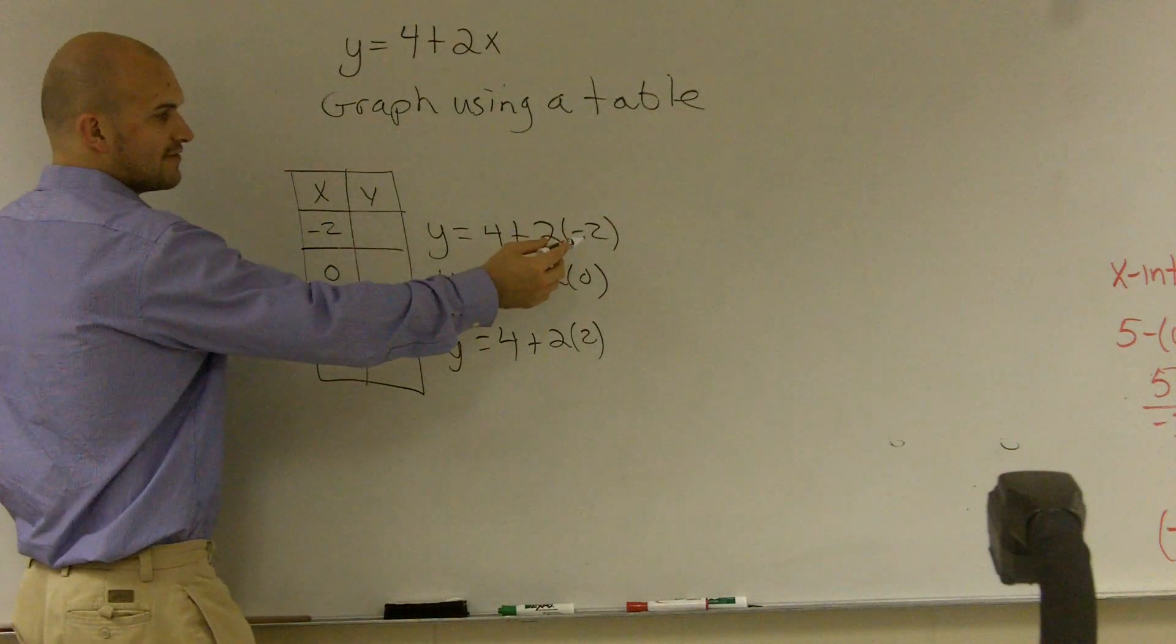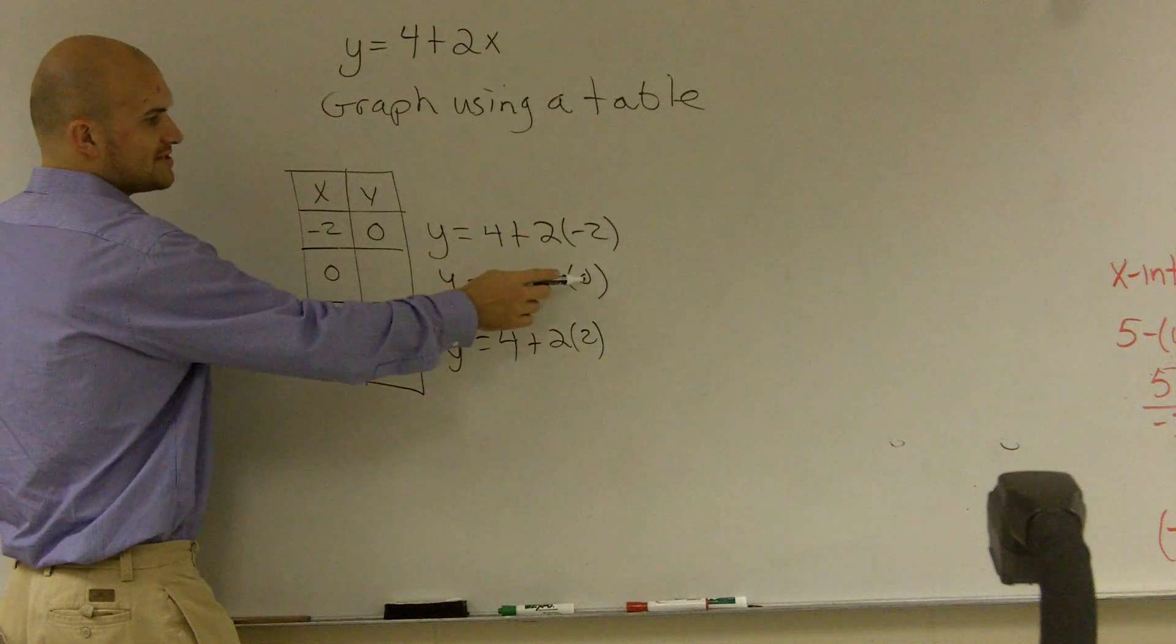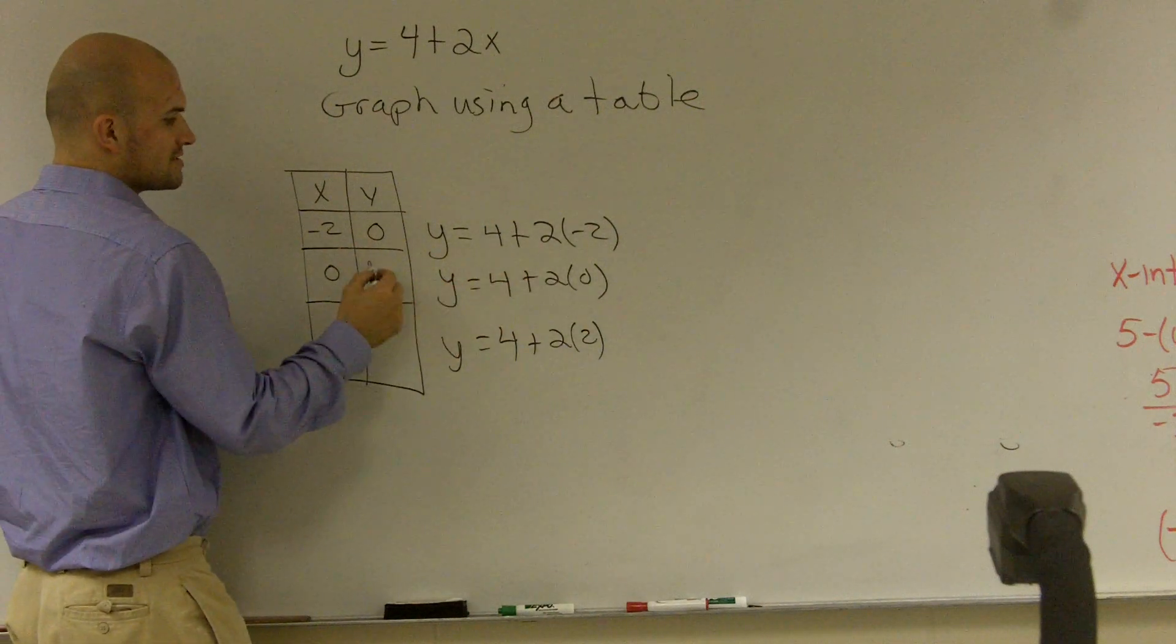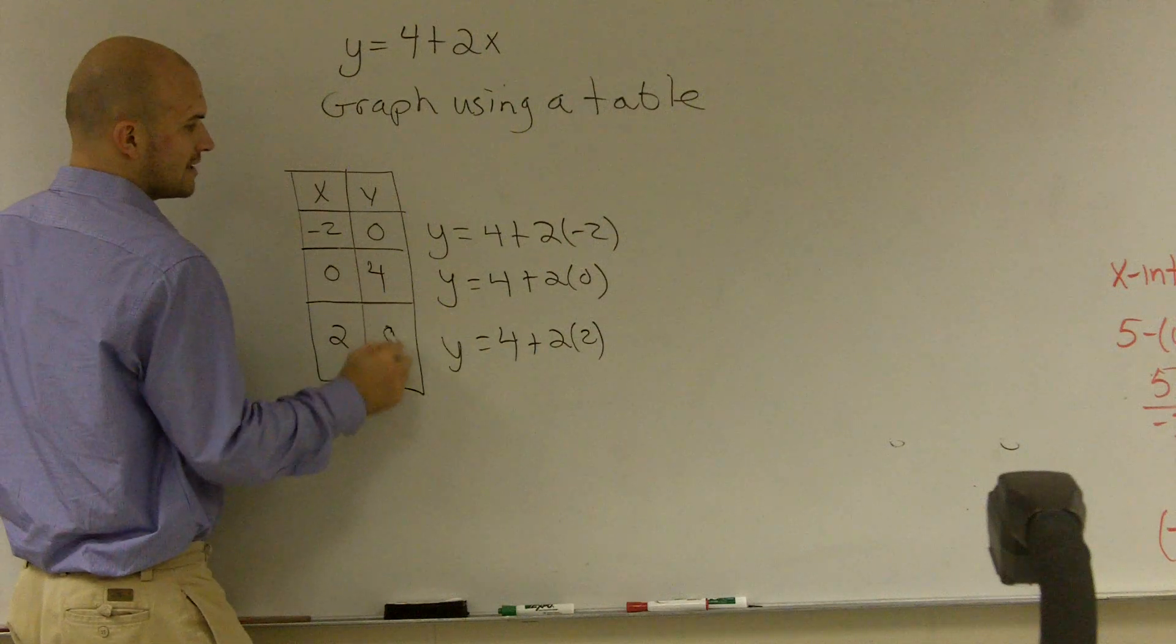So 2 times negative 2 is negative 4. Negative 4 plus 4 is 0. 2 times 0 is 0. 0 plus 4 is 4. 2 times 2 is 4. 4 plus 4 is 8.